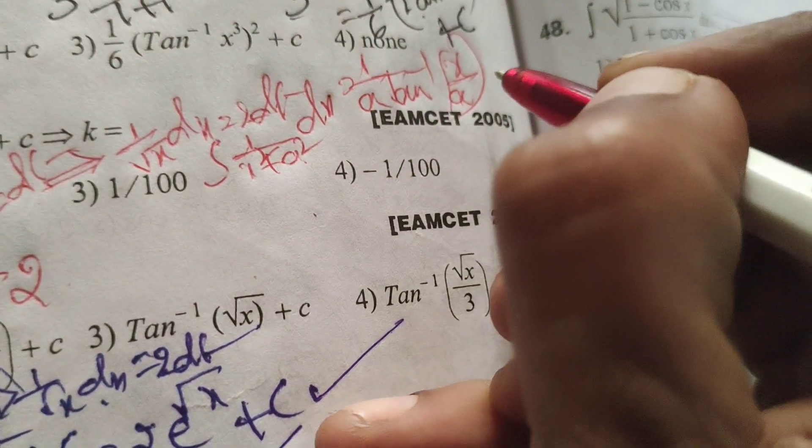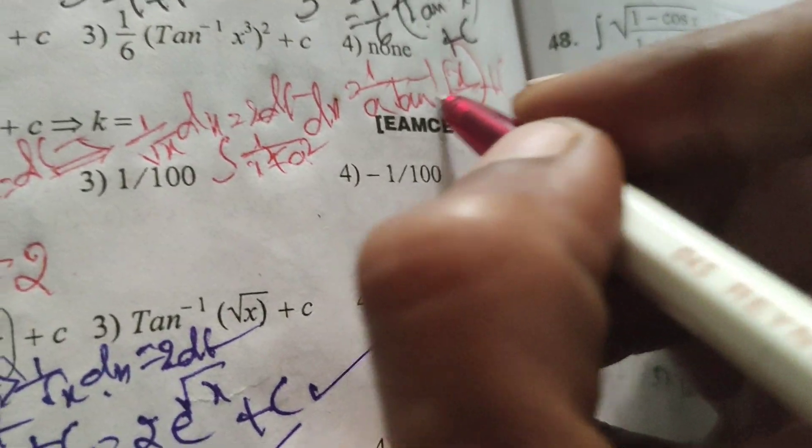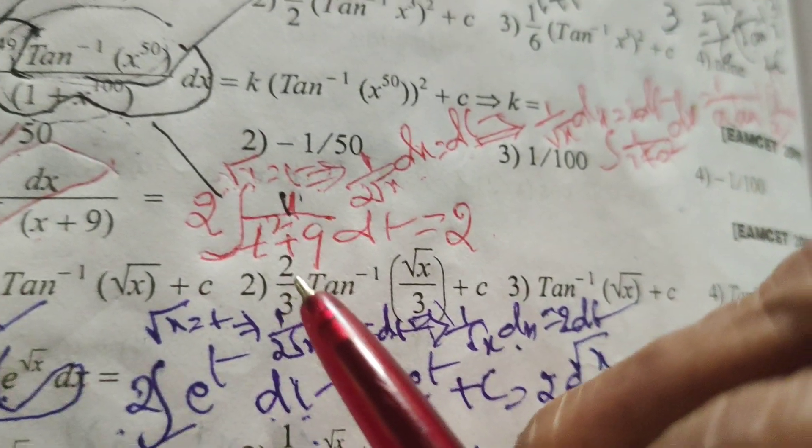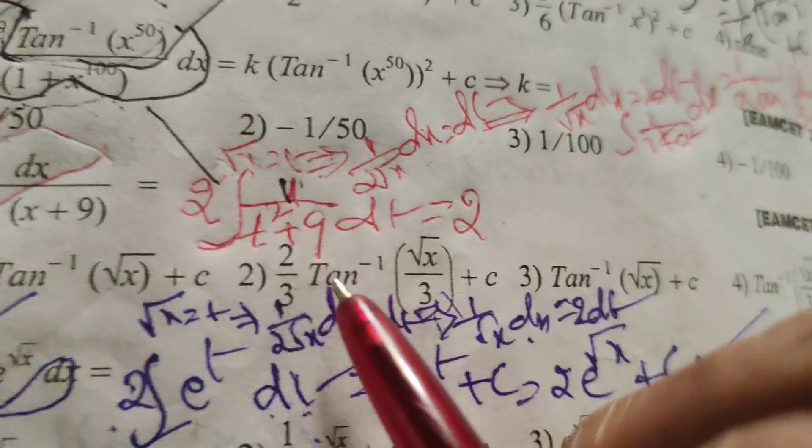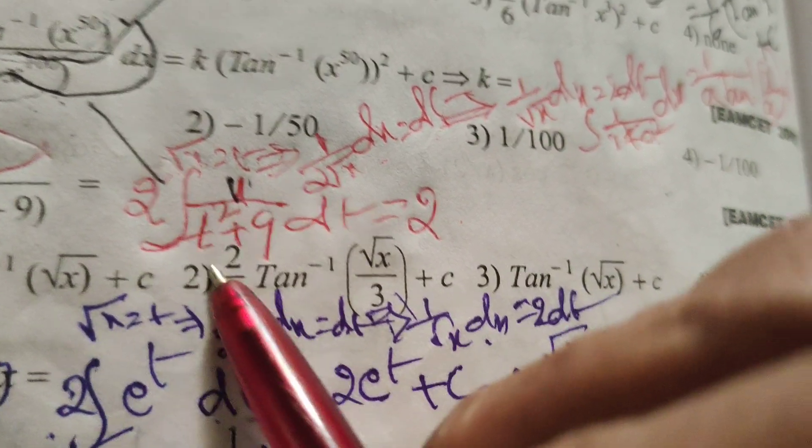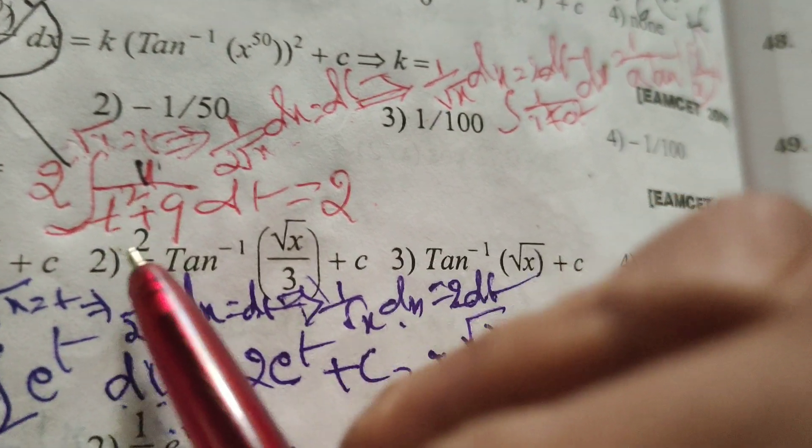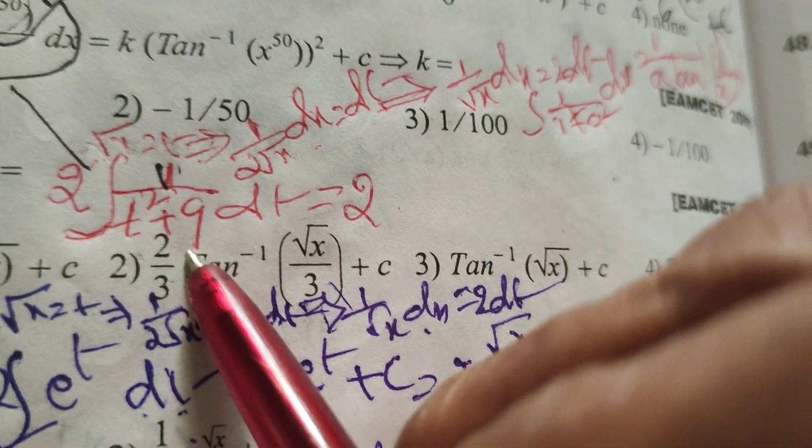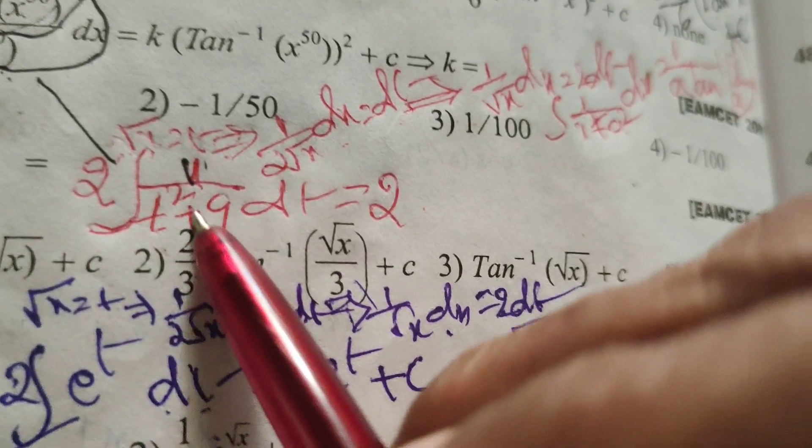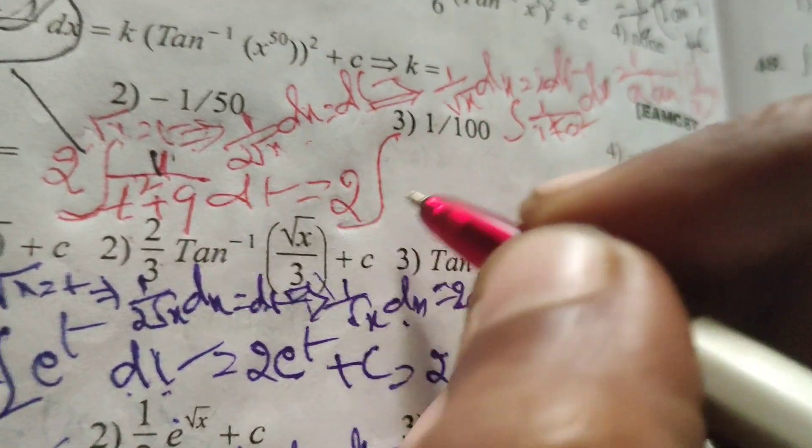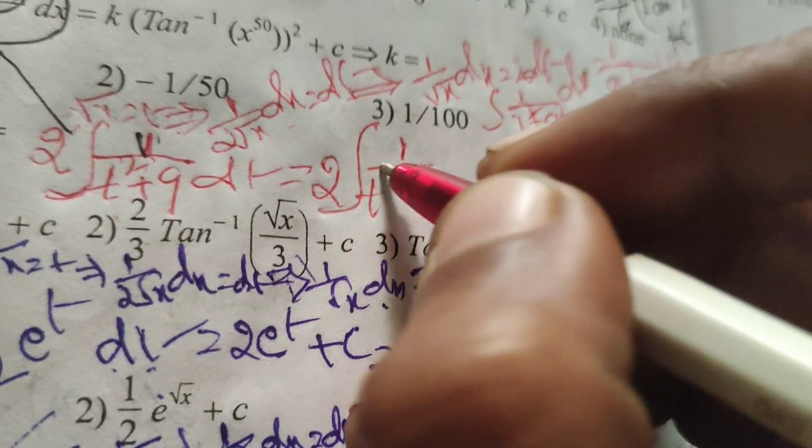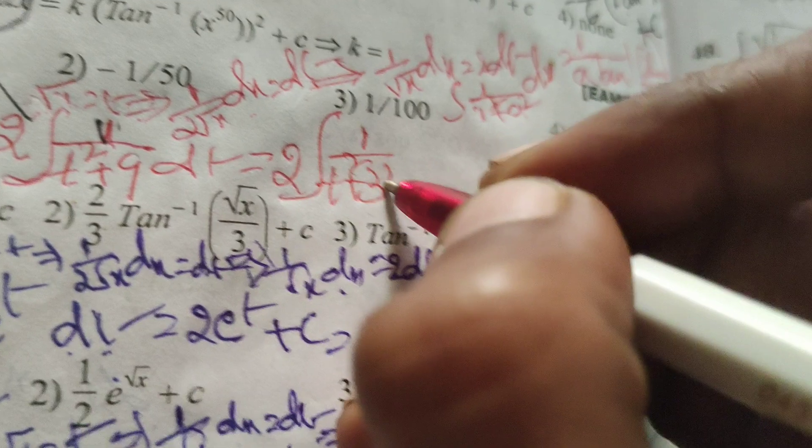Using this formula here, in place of x we have t, and in place of a we have 3, since 9 is 3 square. So we have integral of 1 by t square plus 3 square dt.